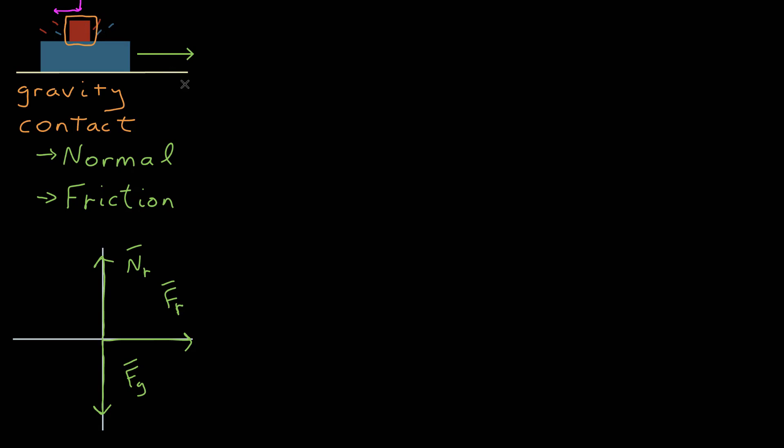The red block was moving relative to blue. So even though red was being pulled to the right, it was sliding to the back of blue, which means it was moving to the left relative to blue.